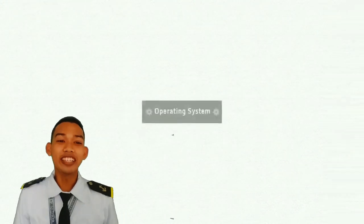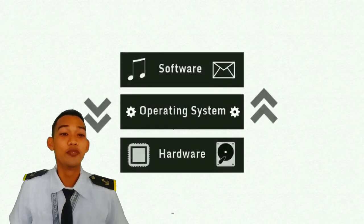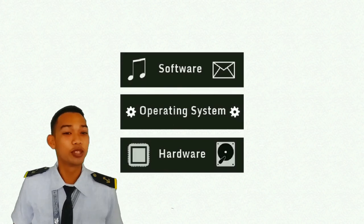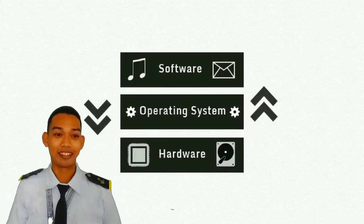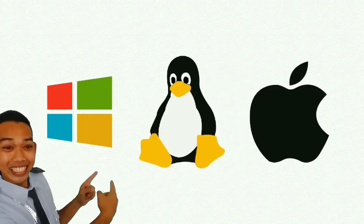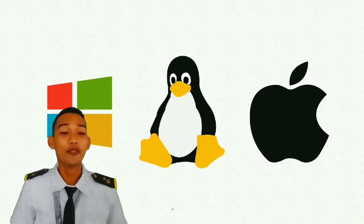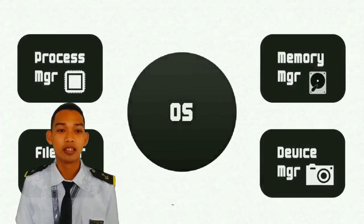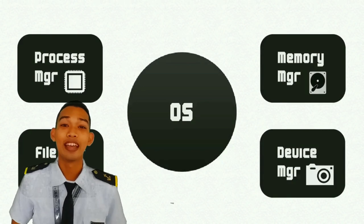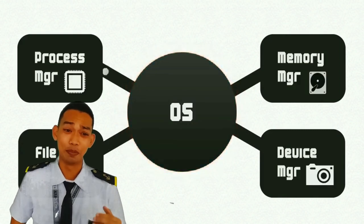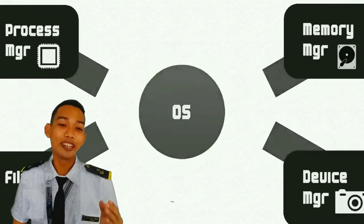In simple terms, the operating system is the chief program that manages all of the hardware and software. It has control of every process, file, section of memory, and device, and it's very important. It works as a middleman, making sure both hardware and software interact correctly. Windows, Mac OS, Linux, and Unix are the big operating system contenders and all have their own advantages and disadvantages, but they are all based on the same concept. There are four essential managers of every operating system, and they all work together like a team to get jobs completed. The operating system works as their boss to make sure they are all working in harmony.